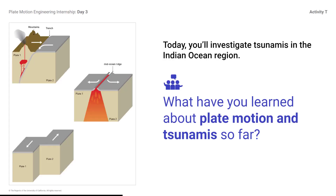Researching Plate Boundaries. What have you learned about plate motion and tsunamis so far? Note the following points that you will be focusing on today: A tsunami is a large, destructive ocean wave primarily caused by a sudden shift in the seafloor that moves a large amount of water. Tsunamis can cause lots of damage to places on land. Earthquakes are due to movement along the three types of plate boundaries — convergent, divergent, and transform. Plate boundaries that result in vertical motion of the seafloor can cause tsunamis, and convergent boundaries are the most likely to produce this type of motion.